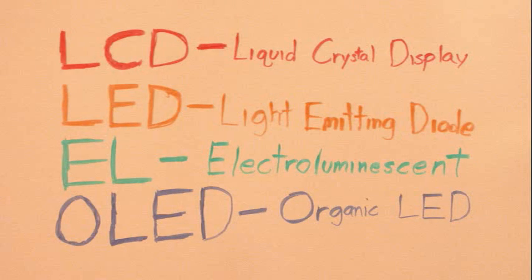There are two major types of backlights for LCDs. One is LEDs, which stands for Light Emitting Diode, and the other is EL, which stands for Electroluminescent. EL backlights tend to be more efficient and have more uniform lighting than LED ones, but they require some tricky circuitry to drive.